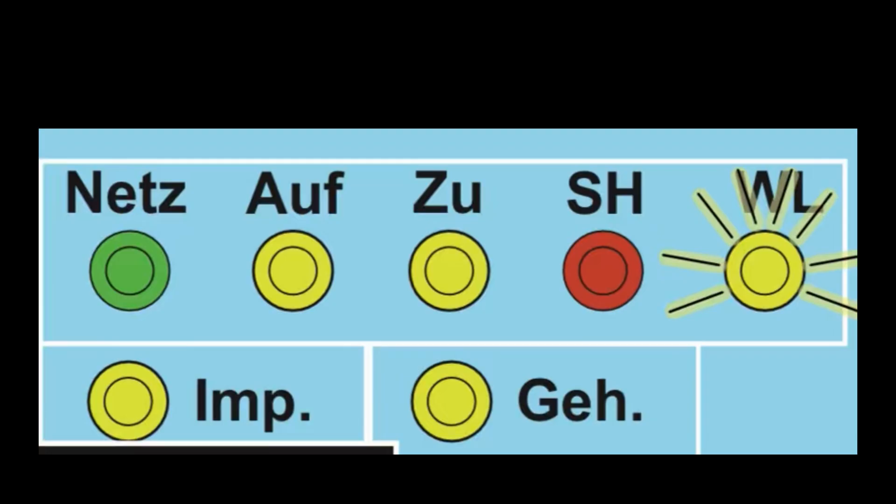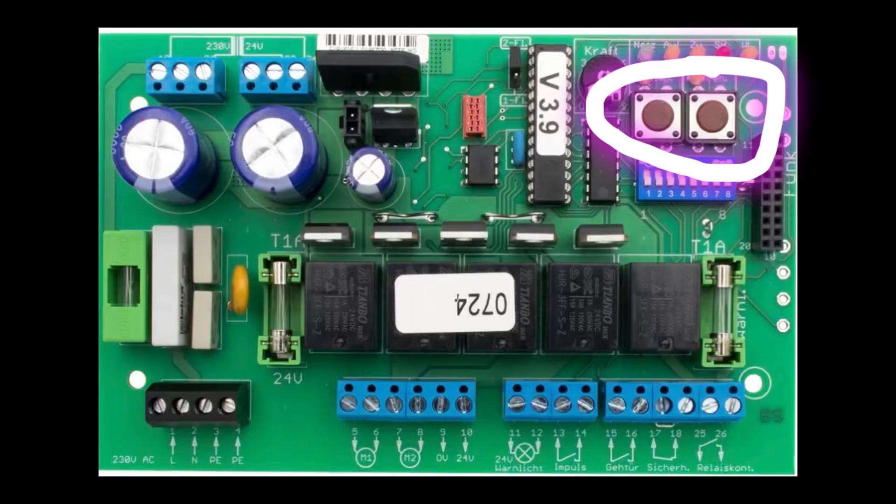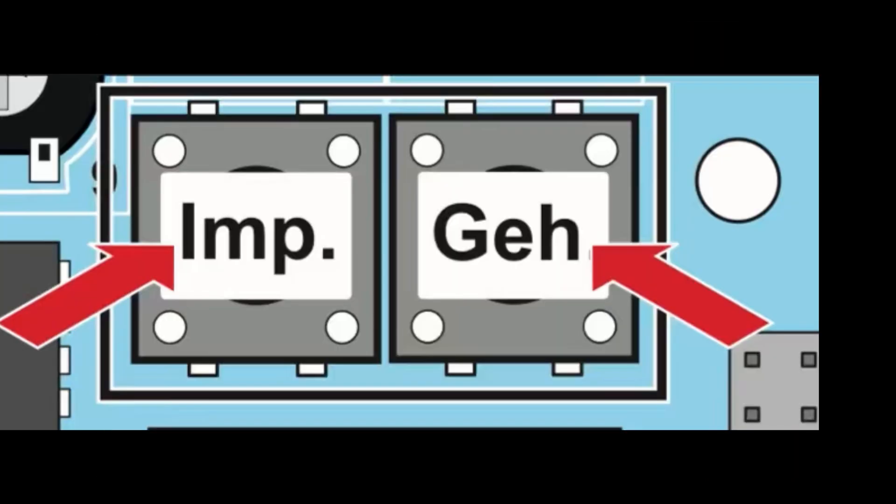Gate movement. On means gate opens and closes with programmed force values. On means warning light on. Buttons: impulse button for double leaves. Impulse button for single leaf.